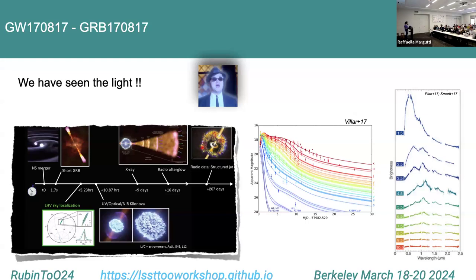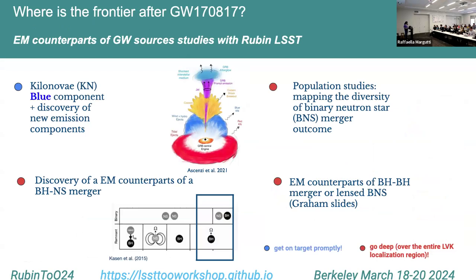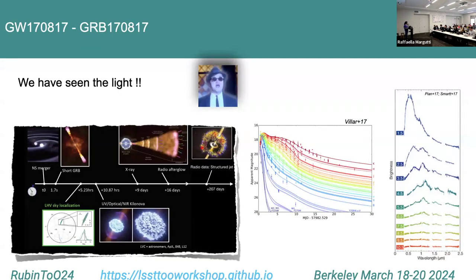We succeeded in 2017 when we saw the first electromagnetic counterpart of a gravitational wave — a merger between two neutron stars at 40 megaparsecs. This was arguably the biggest observational campaign in astrophysical history. On the right side you can see the time evolution of the spectra of that kilonova. We are now in the fourth observing run of LIGO and Virgo, and despite expectations, we have not yet detected another electromagnetic counterpart.